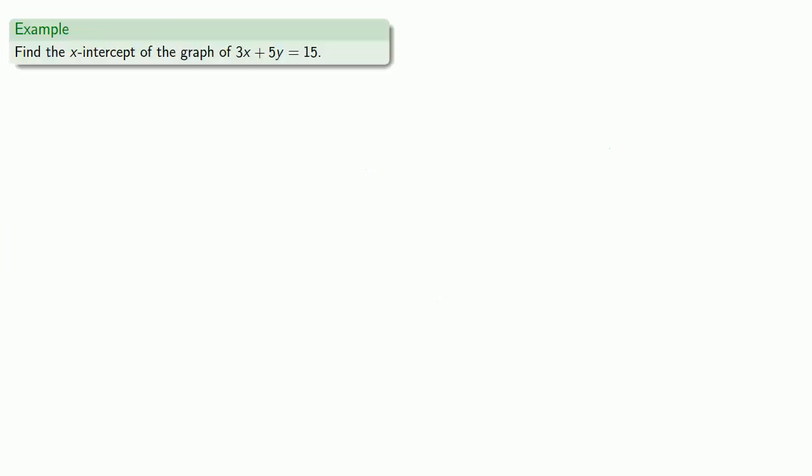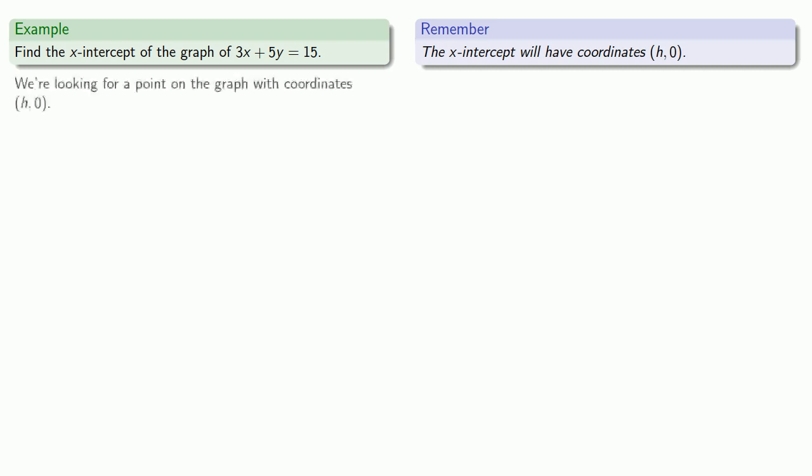So for example, let's say I want to find the x-intercept of the graph 3x + 5y = 15. So remember the x-intercept will have coordinates (h, 0). And that means we need to find a point where the x-coordinate is, I don't know, but our y-coordinate is 0.